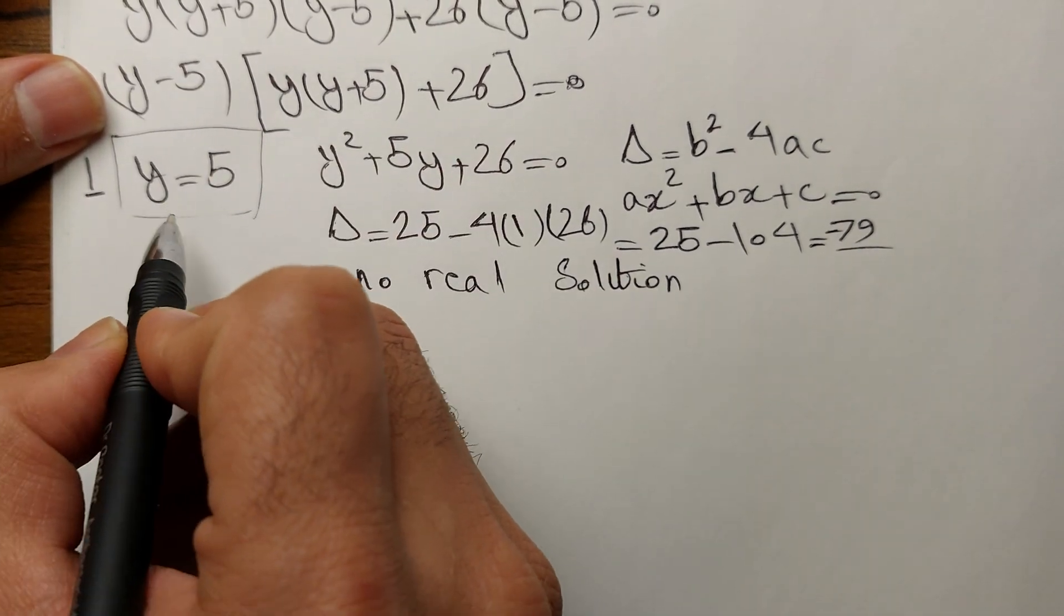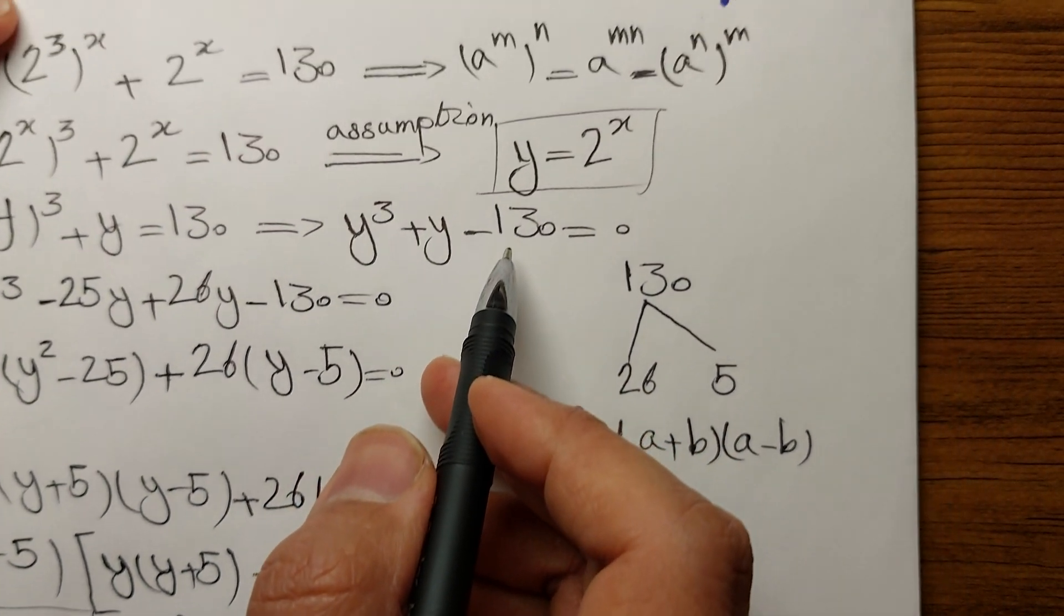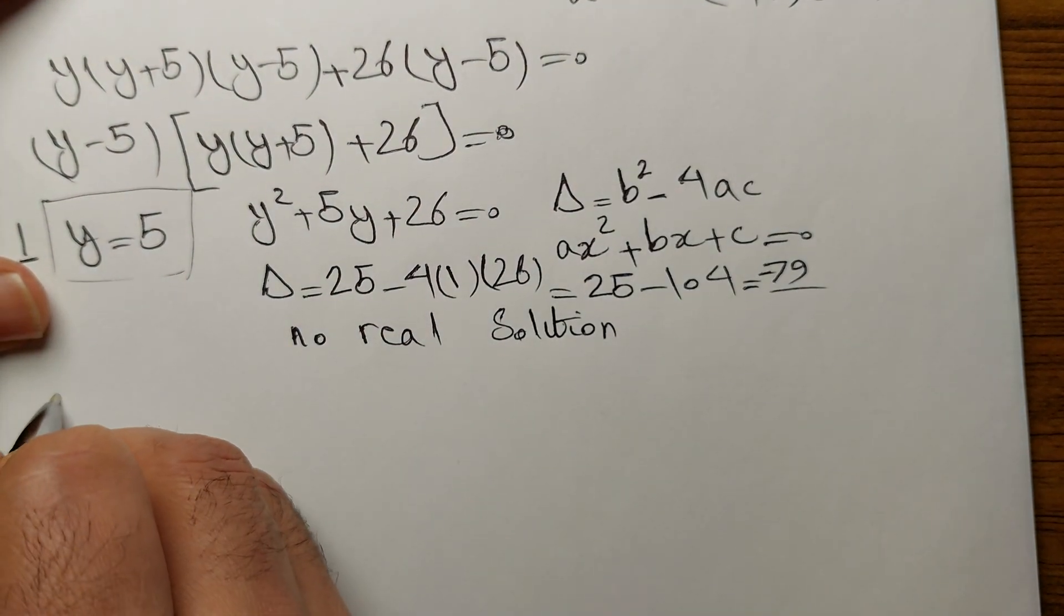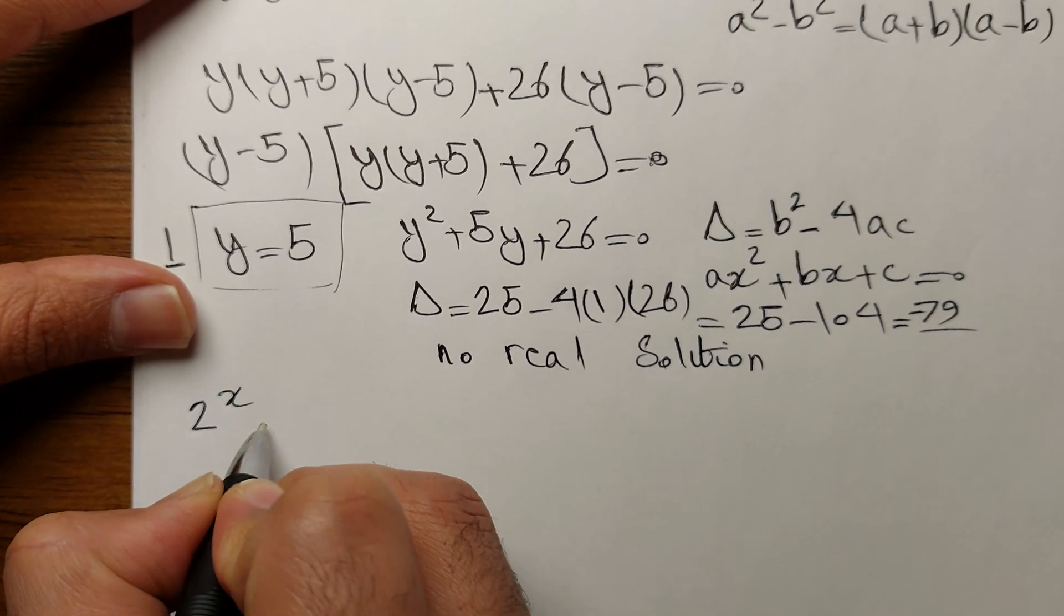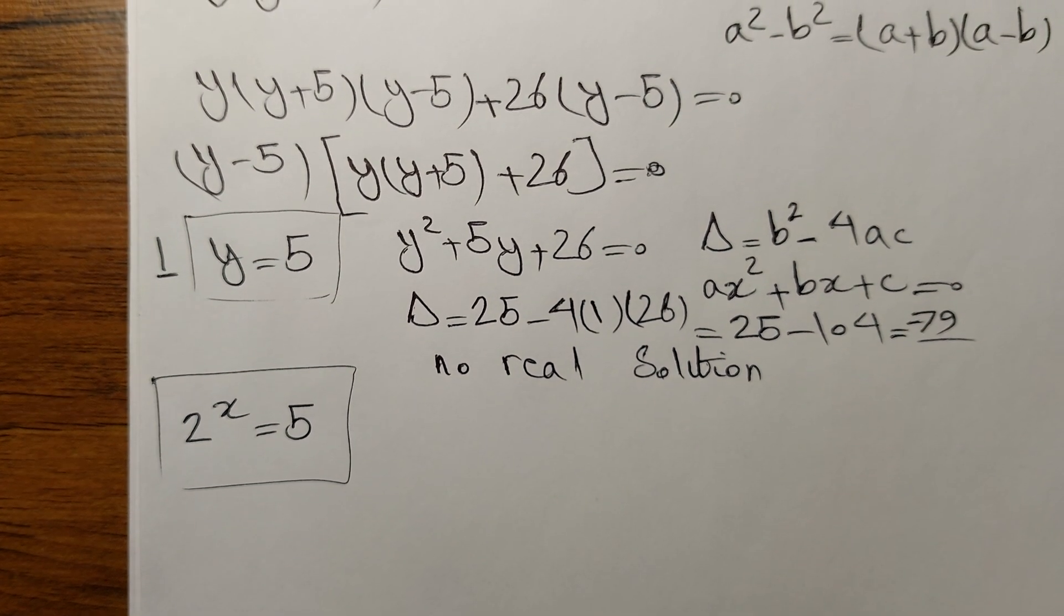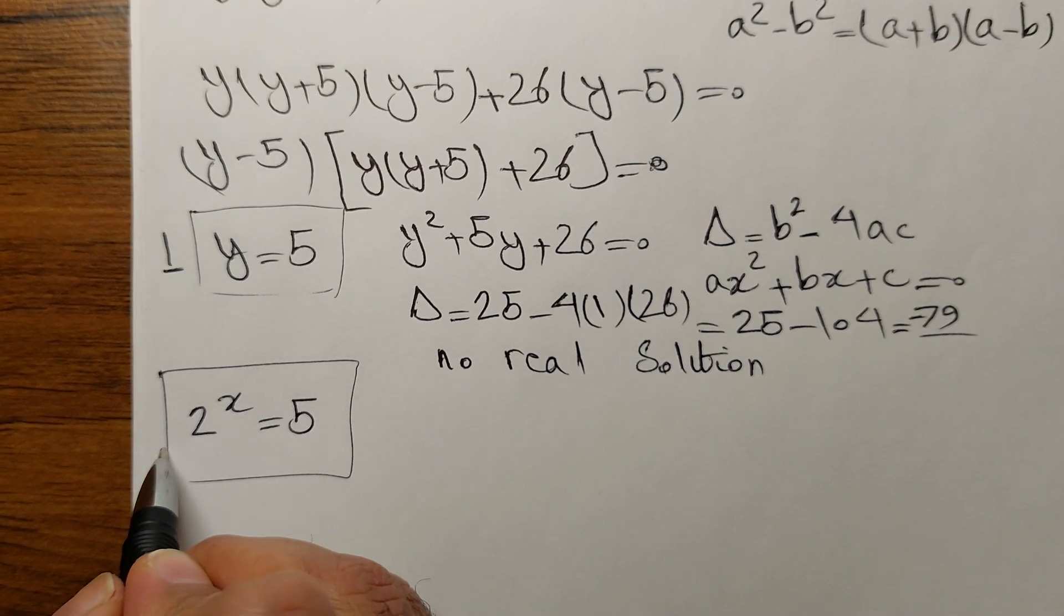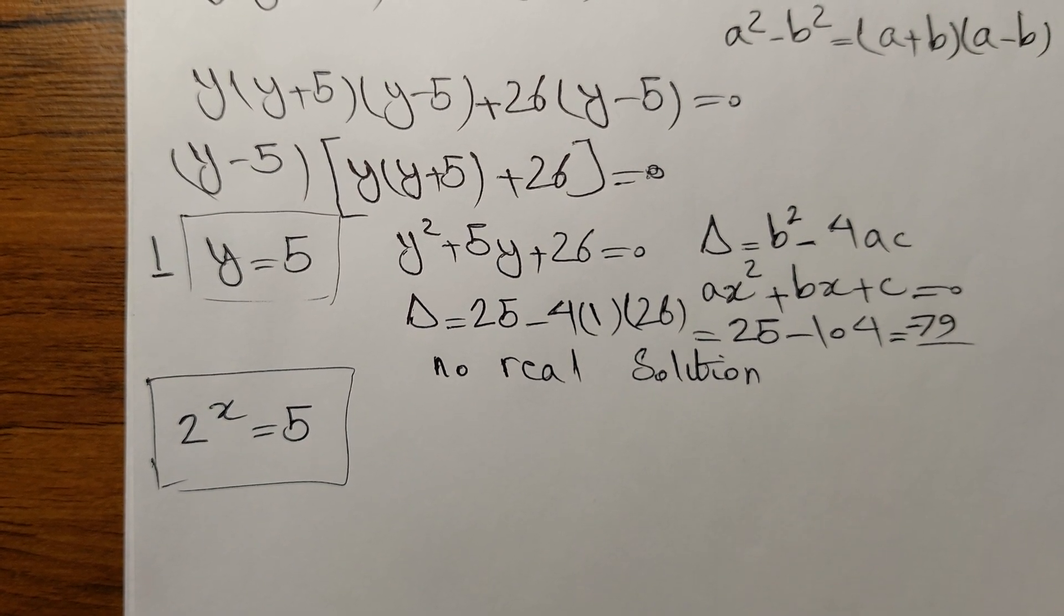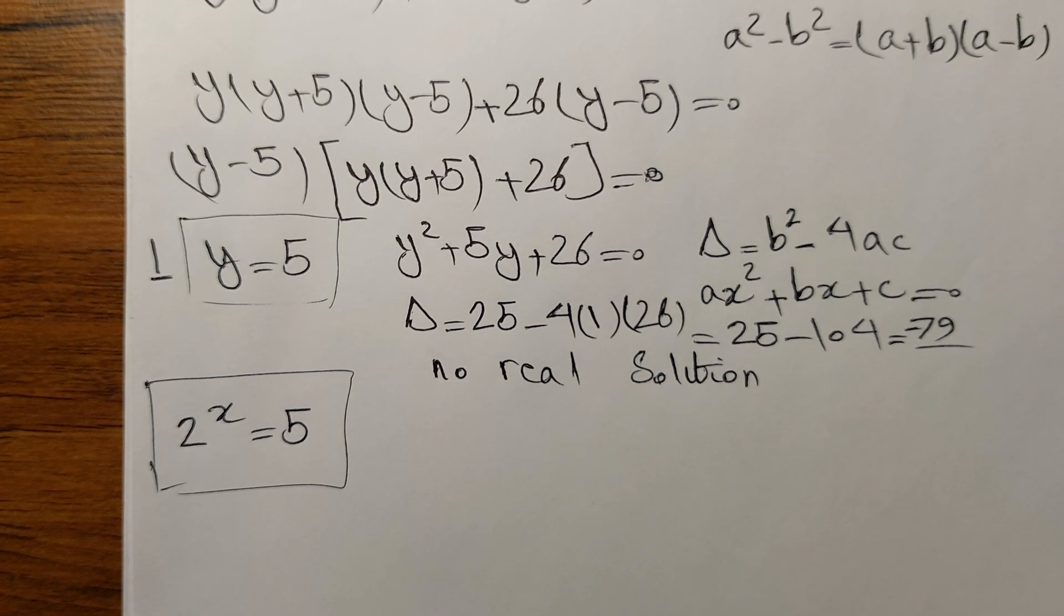We know that y equals 5. Then our first and fundamental assumption was y equals 2 to the power of x. So 2 to the power of x equals 5. We need to solve for x. Finally, that nasty problem. Here, the first thing that comes to mind in this type of exponential equation is to take the log or the logarithm of both sides.